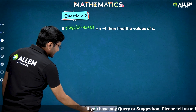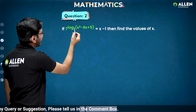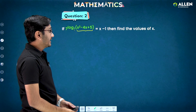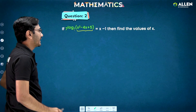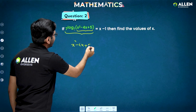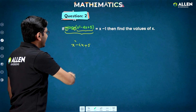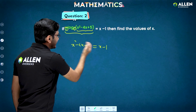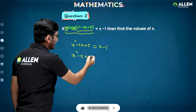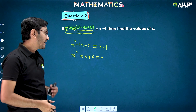Let us see another question. Here it is given that 7 to the power log to the base 7 of (x² - 4x + 5) is equal to x - 1. We need to find the value of x. Definitely, I can straight away write this as x² - 4x + 5, because this 7 and the base 7 have matched. On the right side I have x - 1. Taking all terms to the left side, I get x² - 5x + 6 = 0.